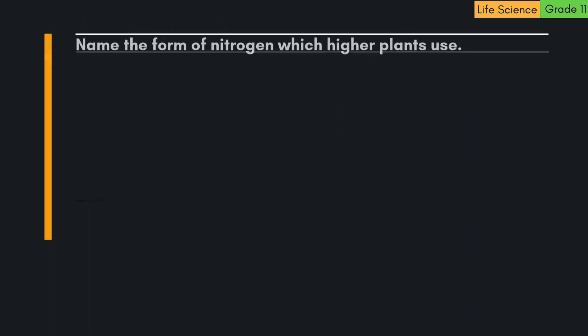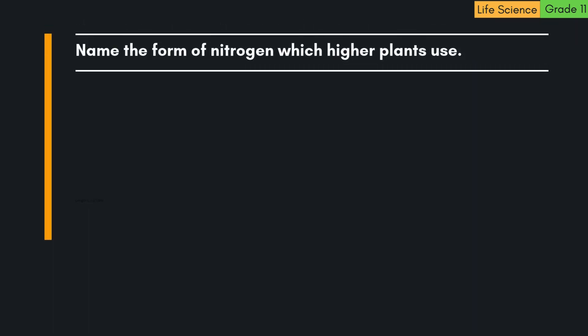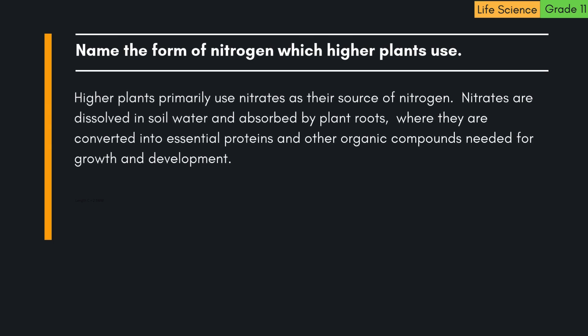Question: Name the form of nitrogen which higher plants use. Higher plants primarily use nitrates as their source of nitrogen. Nitrates are dissolved in soil water and absorbed by plant roots, where they are converted into essential proteins and other organic compounds needed for growth and development.